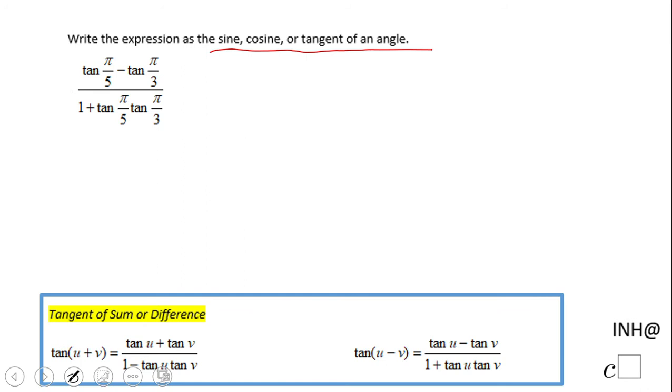Now we're going to look here and see we have tangent of pi over five minus. So now we know that we have to use tangent of difference.